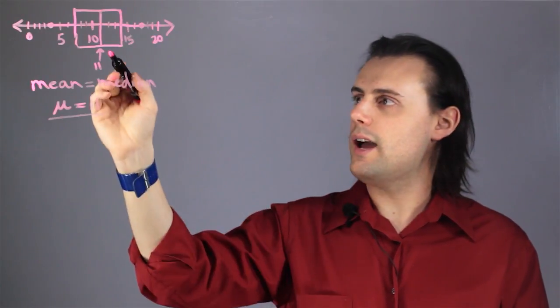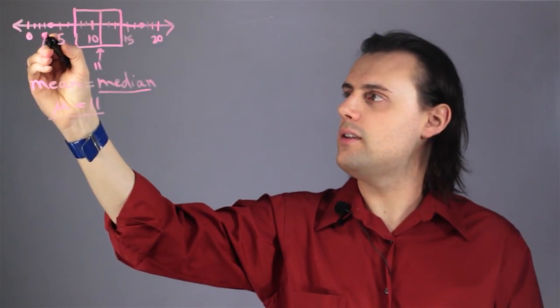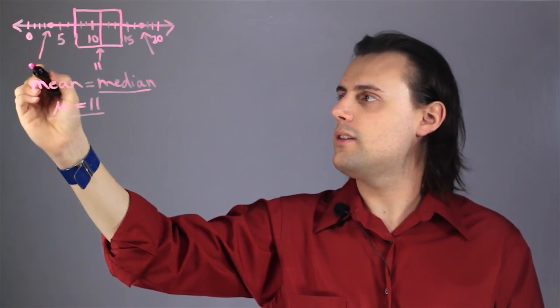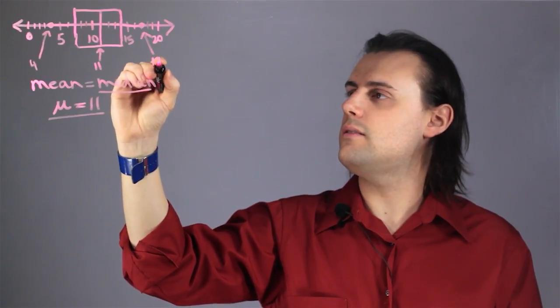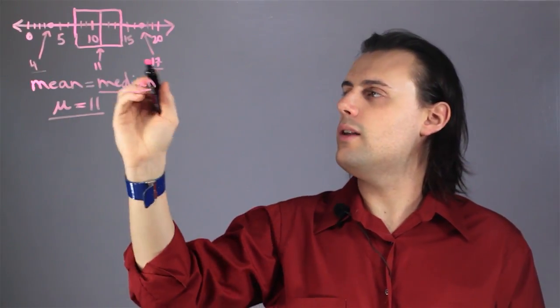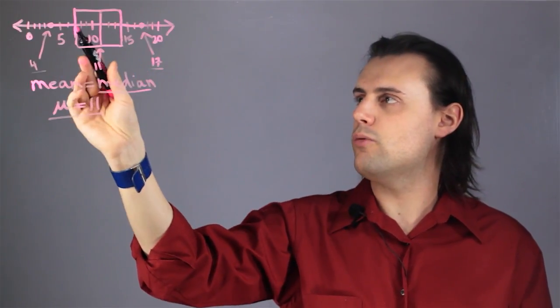So if that's the case then what information can I gather from the box and whisker plot? Well I have the median at least and I have my statistical outliers here. In this case I have 4 and 17 so these outliers do not appear inside the box but are connected to it by the whiskers.